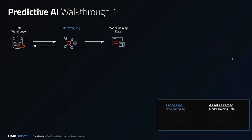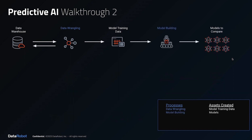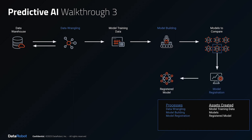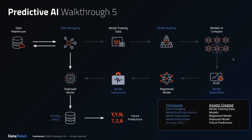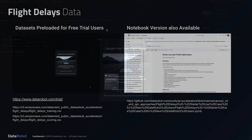Most predictive AI solutions with DataRobot will have these core processes and assets, with the processes identified in blue and the assets in white. What you'll see in the demonstration is the wrangling process to generate the model training data. Then we'll use DataRobot's automation to create multiple models that we can compare side by side. Third, we'll select one model and send it through the model registration process. Once registered, we'll configure the deployment and deploy the model. Then we'll interact with that deployment by sending some new data through it as a scoring job and retrieving the future predictions. The dataset we'll be using is small, so we'll run through all five steps in less than one hour of machine time with about 10 minutes of human input required.